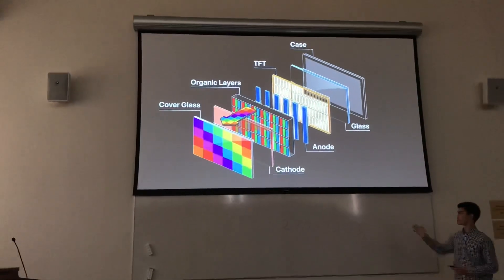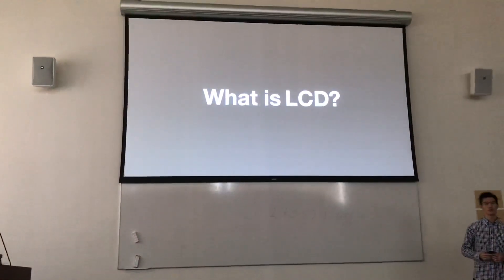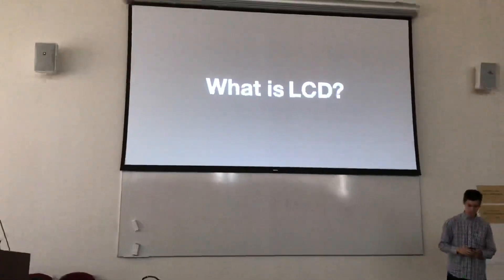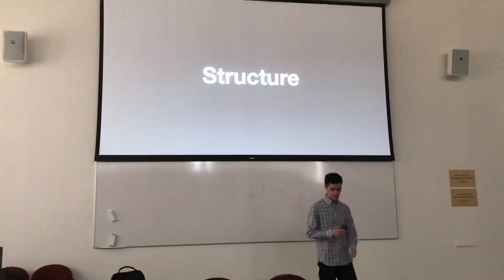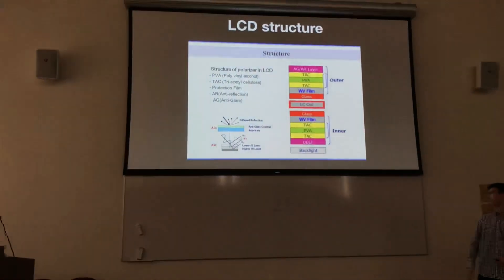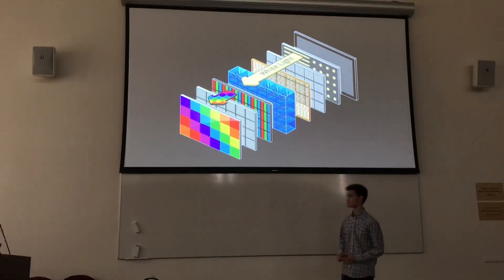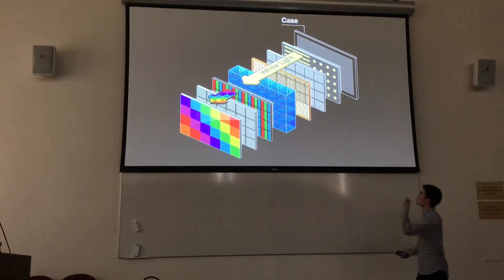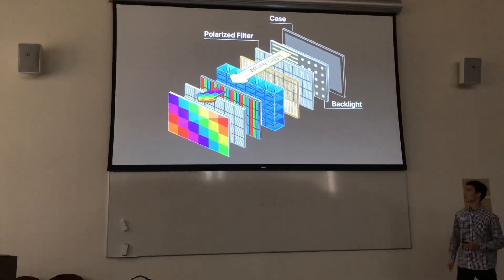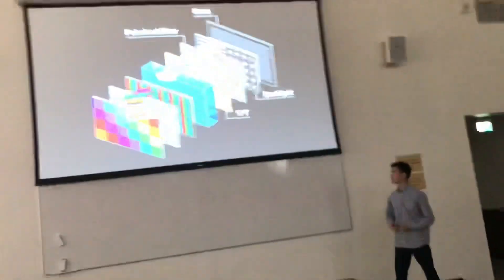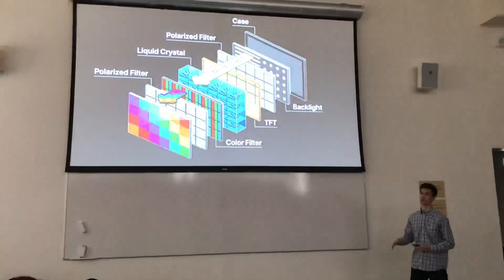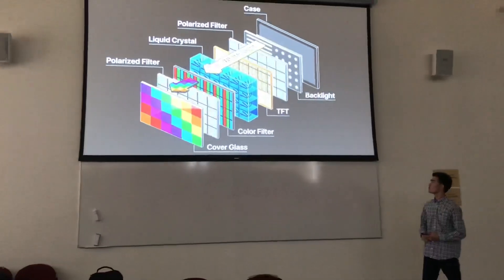What other types of screens do we use? LCD. Does anyone know what LCD is? Liquid crystal display — that's right. Is this image clear? No. And this one? Better — much better. The layers are: the case, then the backlight, a polarized filter, thin film transistors, liquid crystals, a color filter, another polarized filter, and the cover glass.